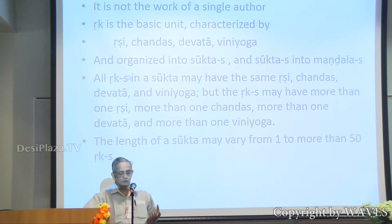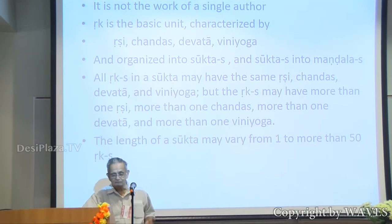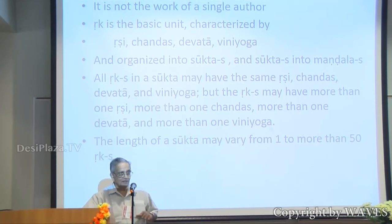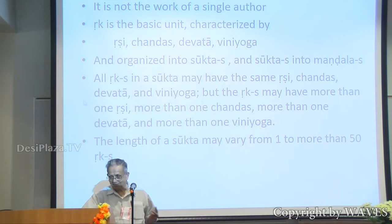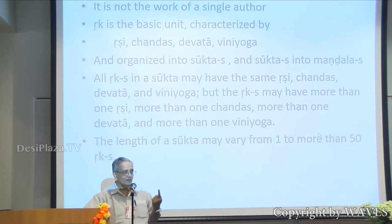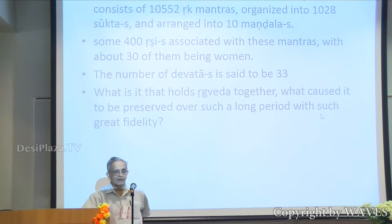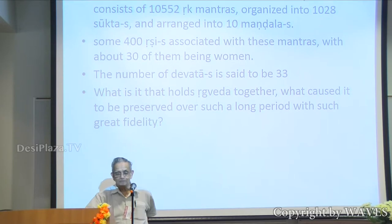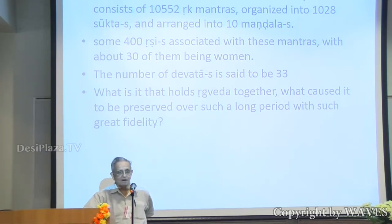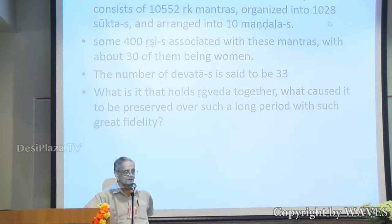All the rigs in a given sukta may have the same rishi, chandas, devata, and vini-yoga, but the rigs may have more than one rishi, more than one chandas — the sukta, not the rig — more than one devata, and more than one vini-yoga. The length of a sukta may be one rig to more than 50. The text available to us is known as Shakala Samhita, consisting of 10,552 rig mantras, organized into 1,028 suktas, and arranged into 10 mandalas.